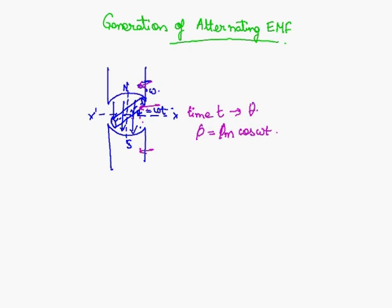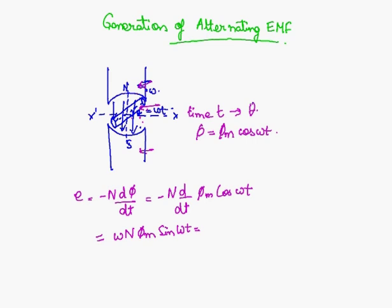The induced EMF at time T is given by E = -N dΦ/dt. Because Φ is Φ_M cos(ωT), this equals ωNΦ_M sin(ωt), which is equal to ωNΦ_M sin(θ) volts. So this is the amount of EMF induced.